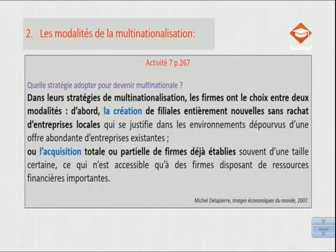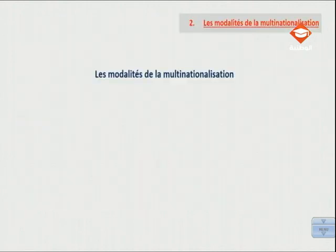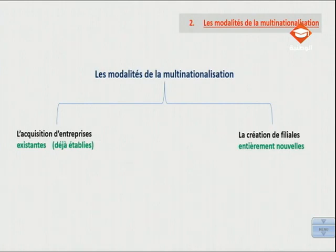Les modalités de la multinationalisation. On va s'appuyer sur l'activité 7, page 267 de notre manuel intitulé « Quelle stratégie adopter pour devenir multinationale ? ». Dans leur stratégie de multinationalisation, les firmes ont le choix entre deux modalités : d'abord la création de filiales entièrement nouvelles sans rachat d'entreprises locales, ou l'acquisition totale ou partielle de firmes déjà établies.